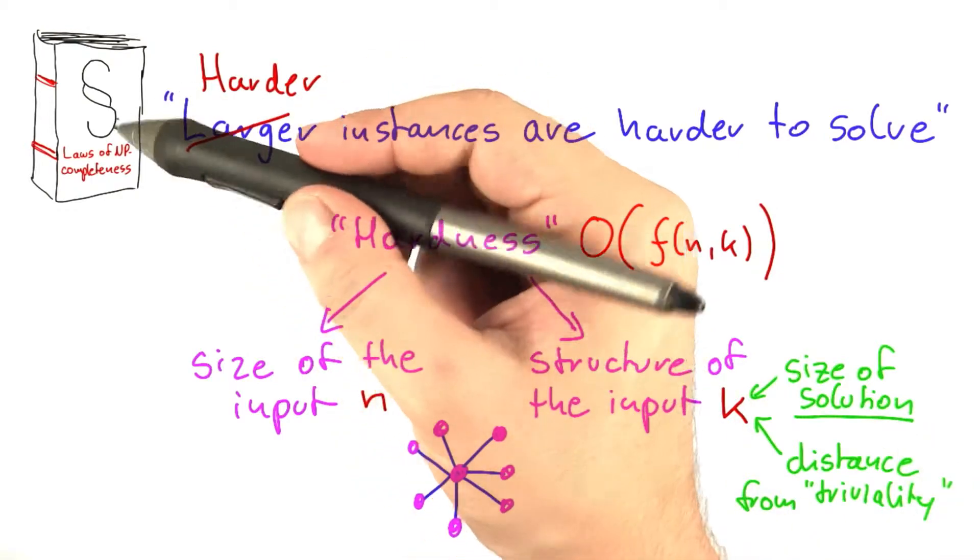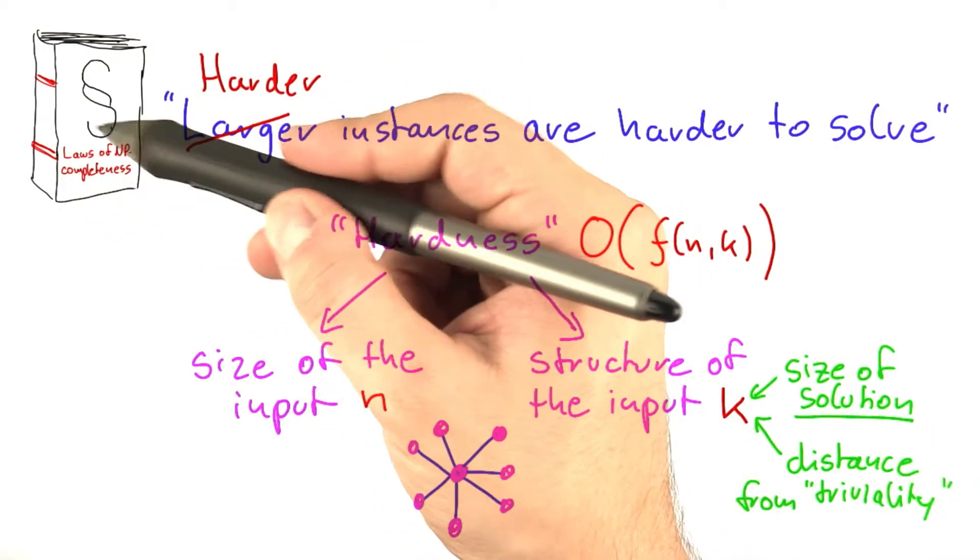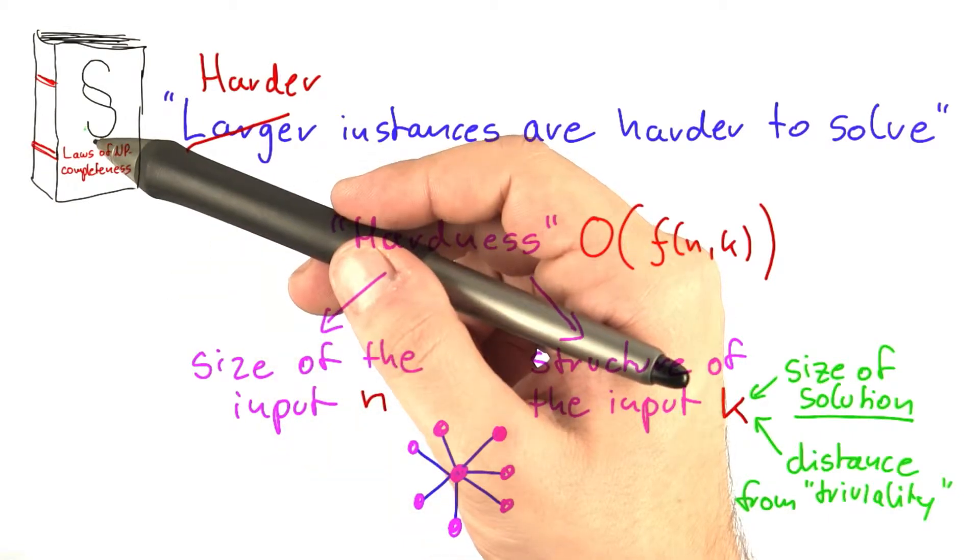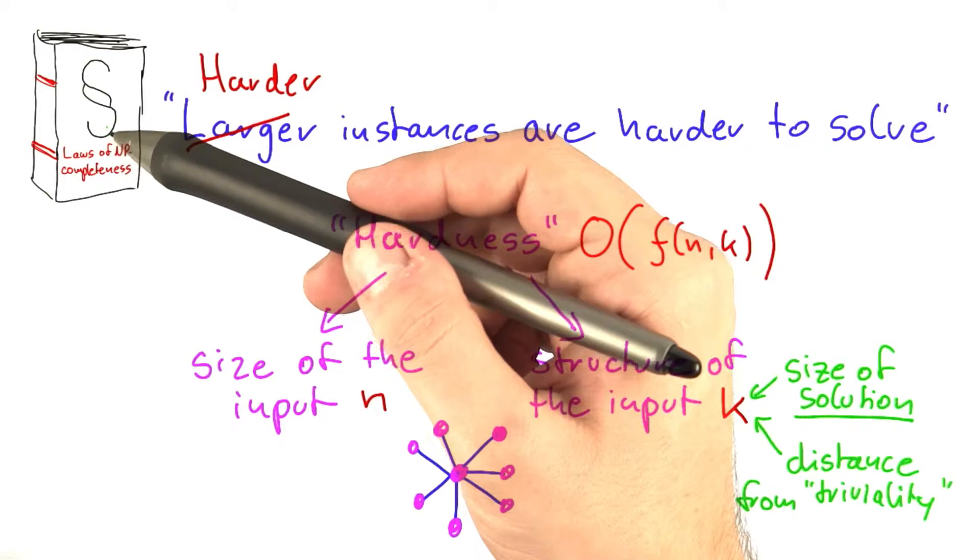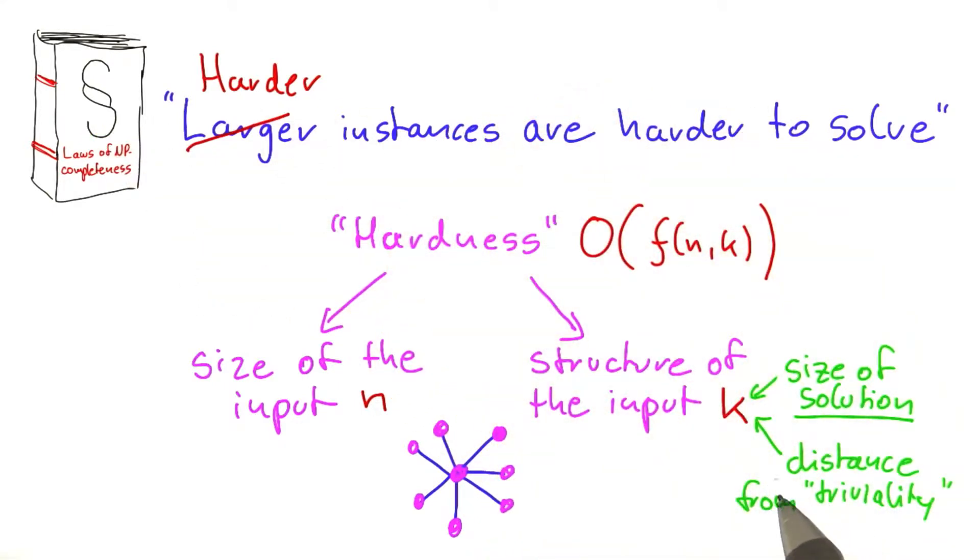Now, of course, this immediately raises a question for the book of the laws of NP completeness. And that question is, is every problem fixed parameter tractable? That depends. It depends on what you consider as a parameter. And one parameter I will soon introduce to you as well is a parameter called distance from triviality.